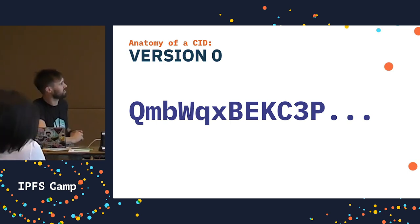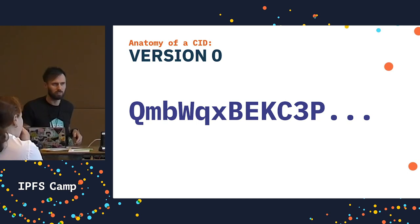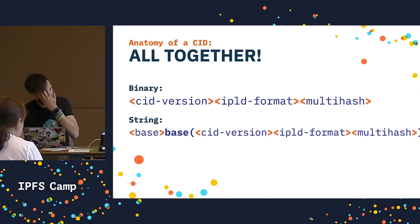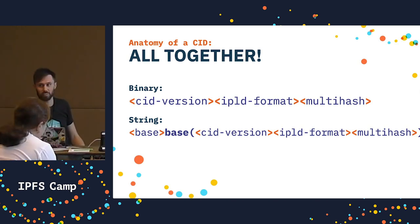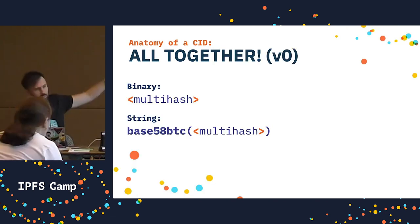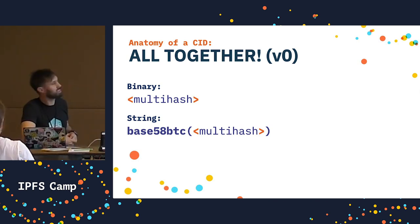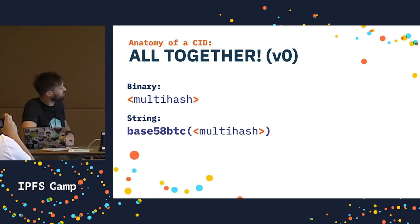The multibase is always base 58 BTC. Version 0 CIDs don't have a format and don't have a CID version. All together for V0s, it's way simpler — they're just multihashes. In string form, they're base 58 encoded multihashes, which is why they start with QM. The multibase is always base 58 BTC — it's implicit, not written. CID version is always 0 — implicit, not written. The IPLD format is always DAG-PB — implicit, not written.